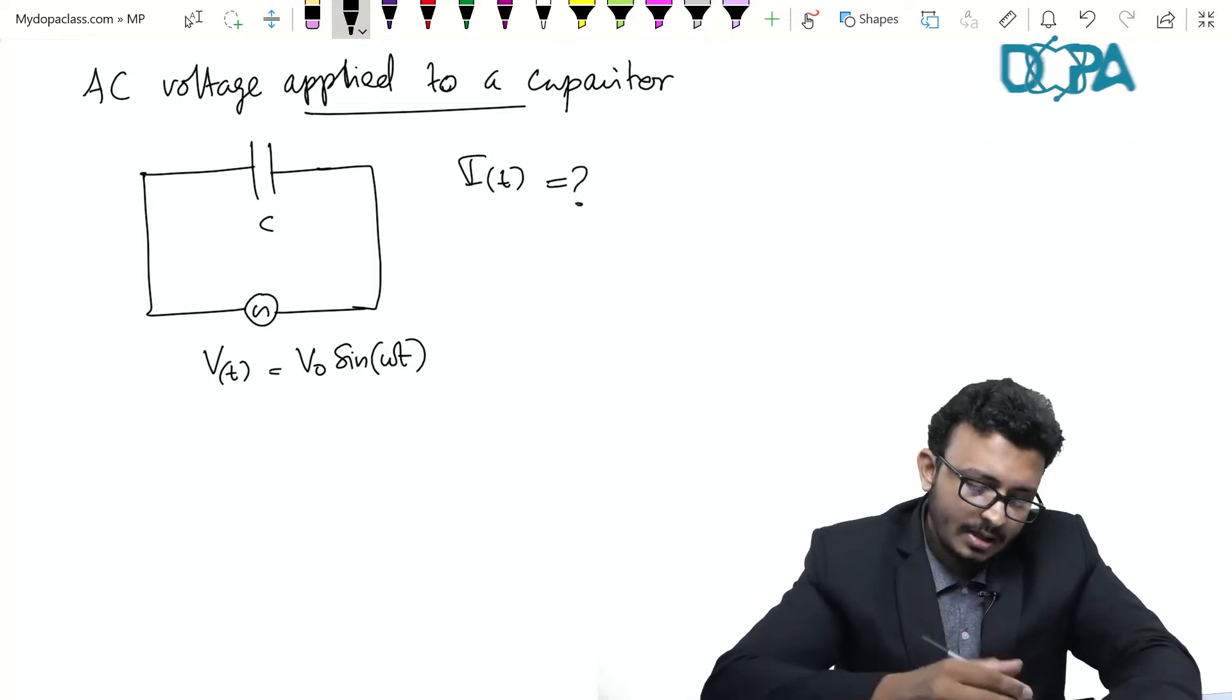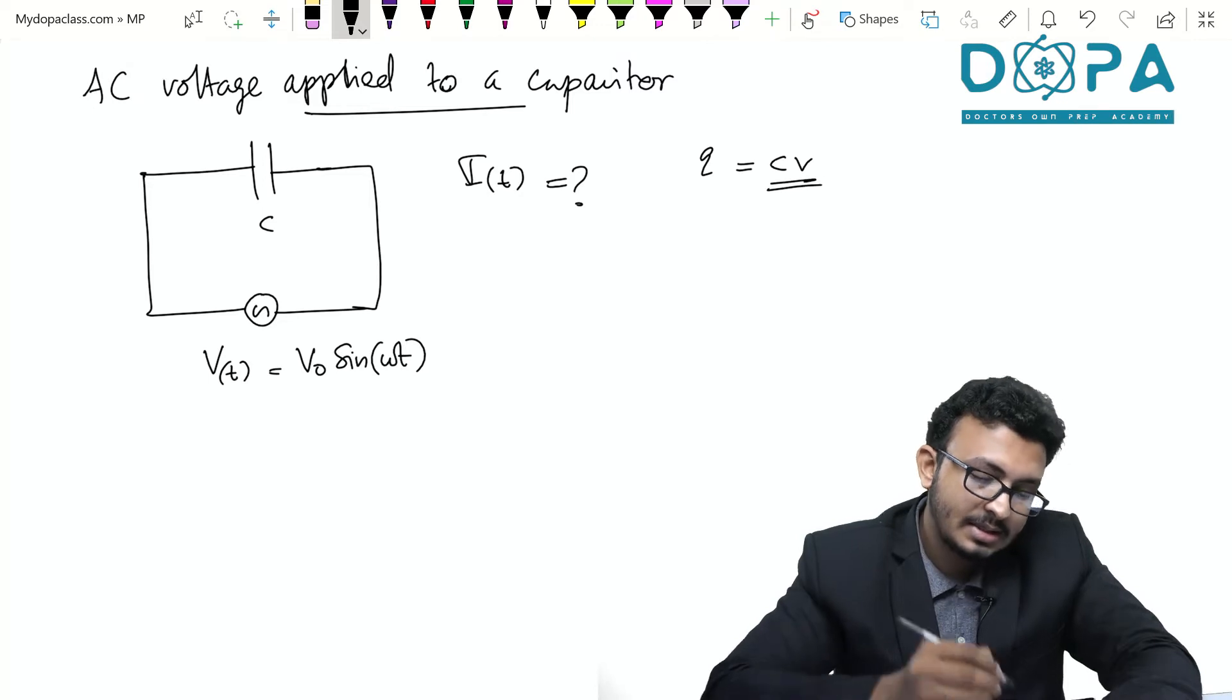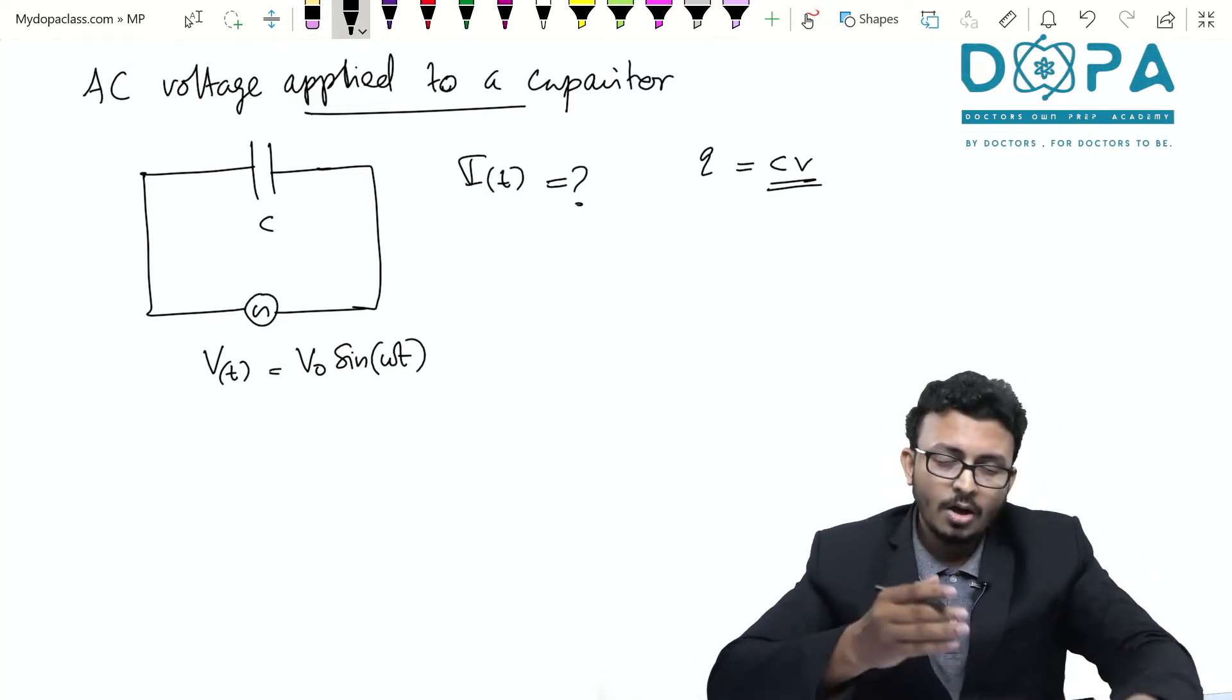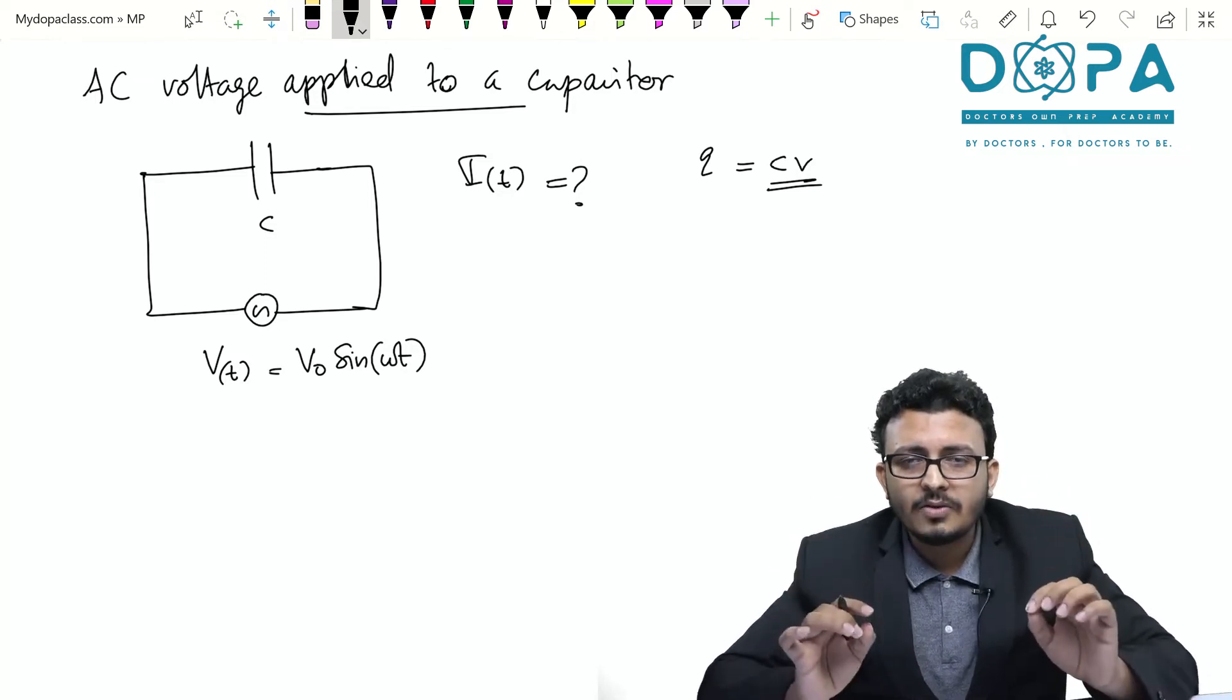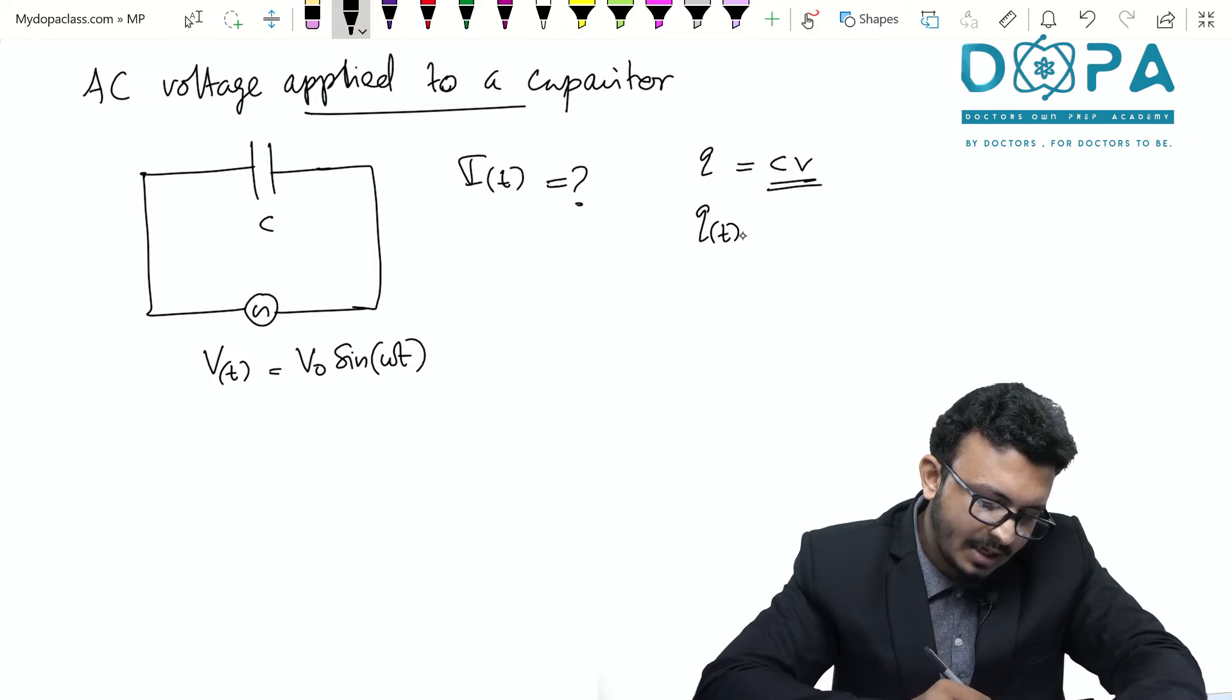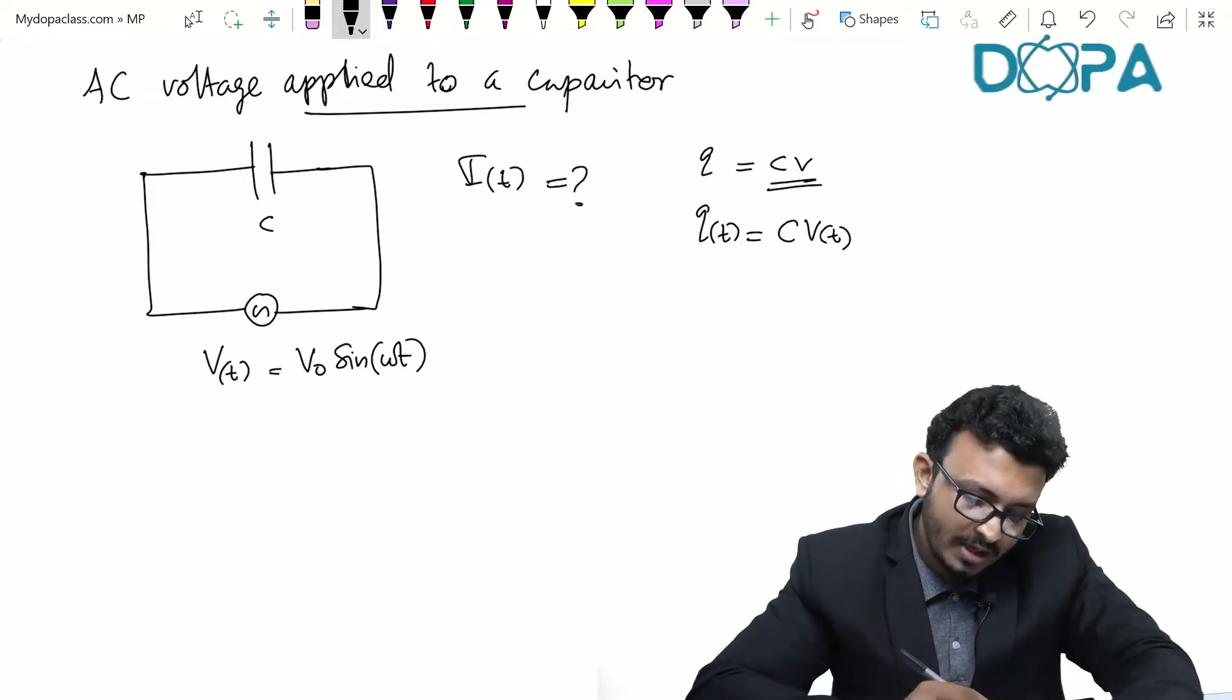What we have in case of a capacitor is the charge stored in a capacitor is CV where V is the potential difference across the capacitor. Here we have applied this time varying voltage directly to the capacitor. That means the charge across the capacitor is equal to C into V(t). Since the voltage is varying with respect to time the charge is also varying with respect to time.